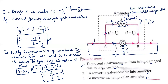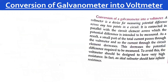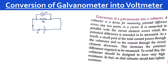Next is how to convert a galvanometer into a voltmeter. In every circuit, whenever we want to measure the potential drop across any resistance, a voltmeter is always connected in parallel with that particular component. If I think current I flows here, it gets distributed — some goes through the voltmeter branch and some through the component.